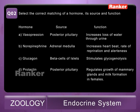Option B — norepinephrine, adrenal medulla, increases heartbeat, rate of respiration, and alertness. Norepinephrine and epinephrine are two hormones secreted by the adrenal medulla. They increase heartbeat, rate of respiration, and alertness. So option B is correct.